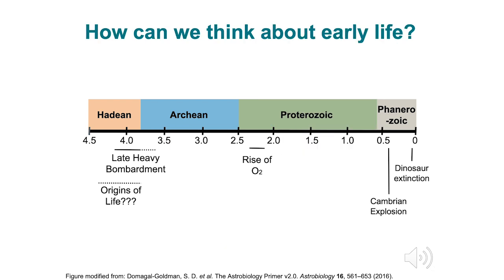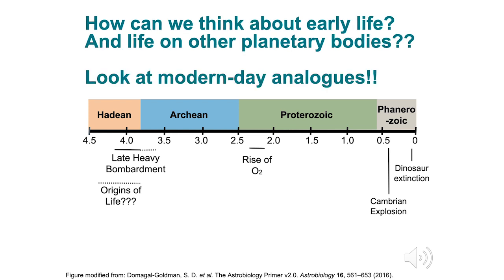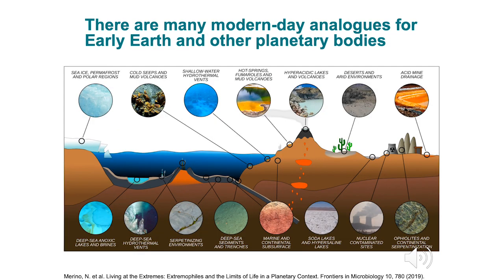Now we have an idea of what early Earth was like, and in modern day times we are faced with the task of deciphering the origins and evolution of life. How can we think about early life right now? And how can we think about life on other planetary bodies? Modern day Earth actually has some answers for us. The Earth today is covered with many modern day analogues for early Earth and other planetary bodies.